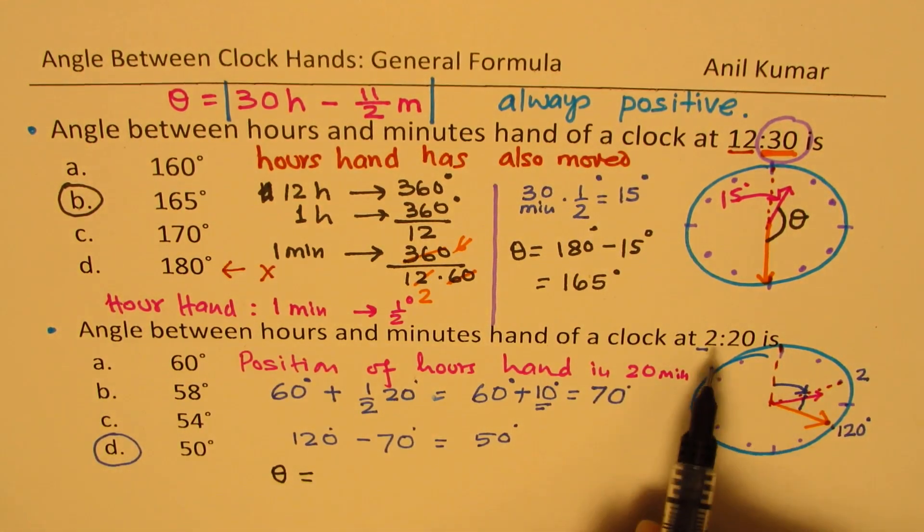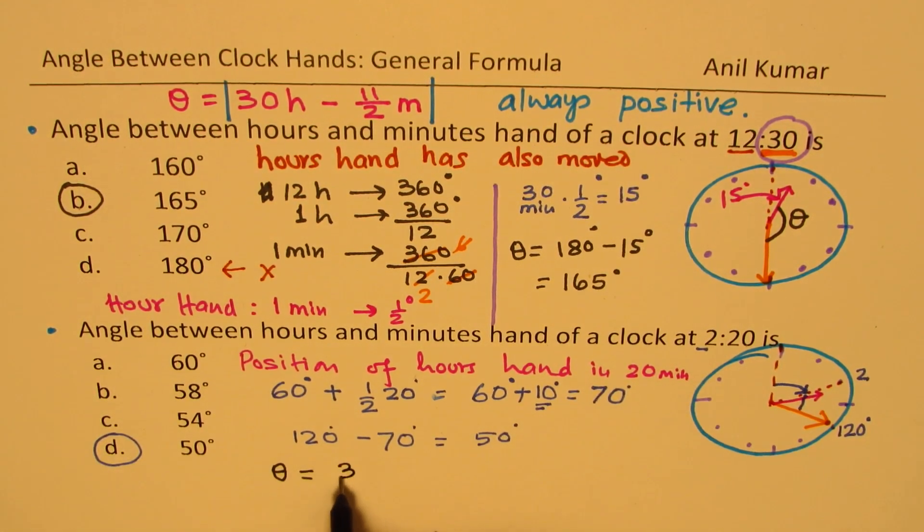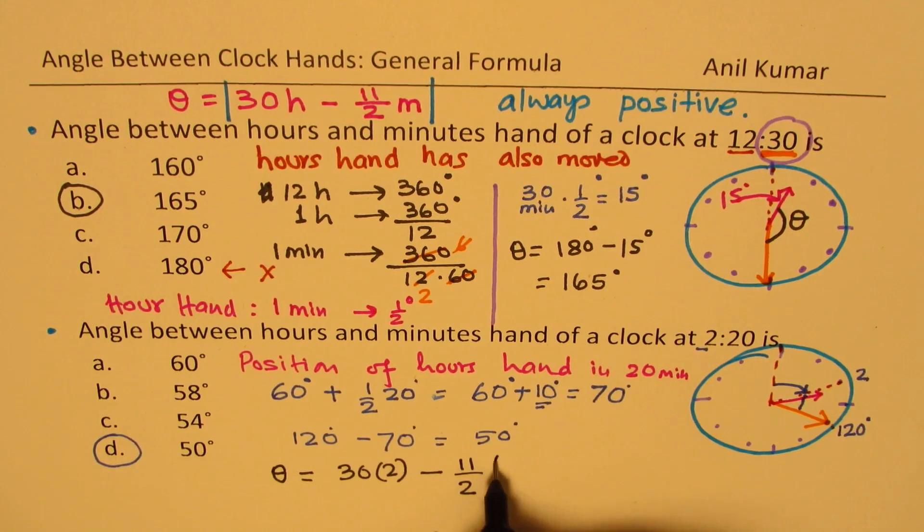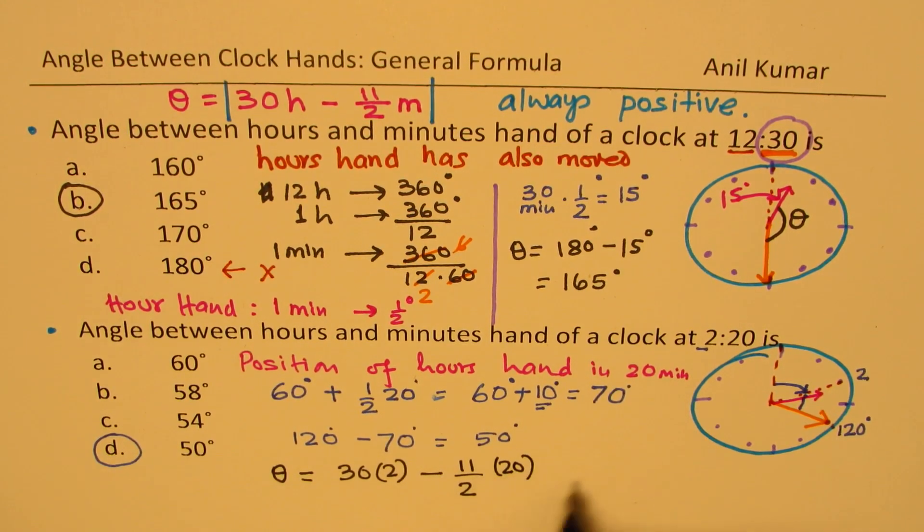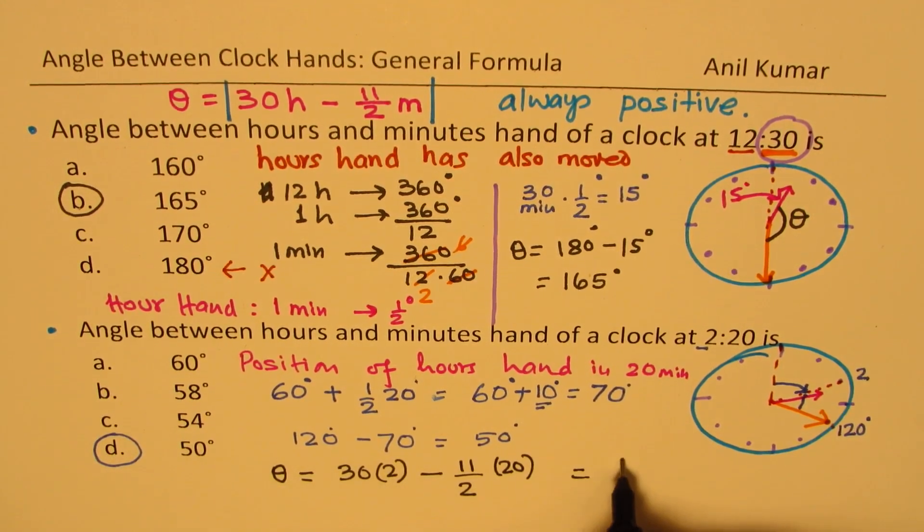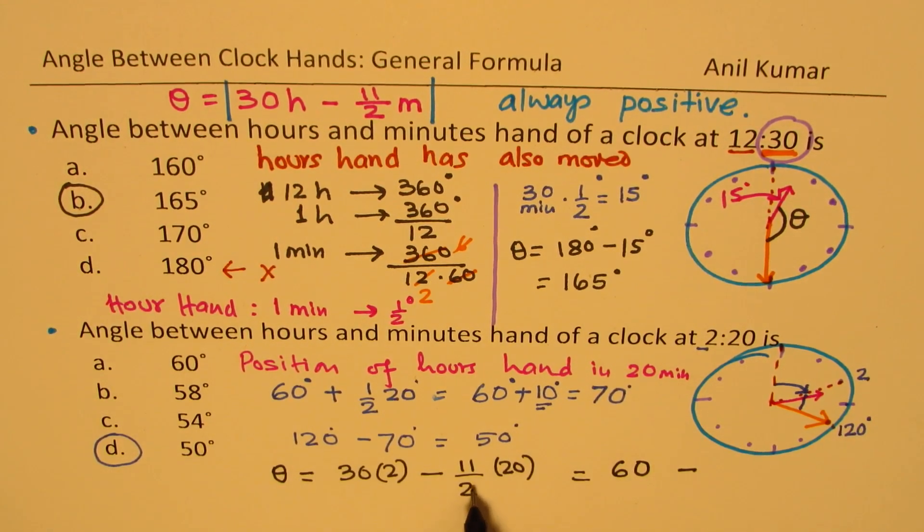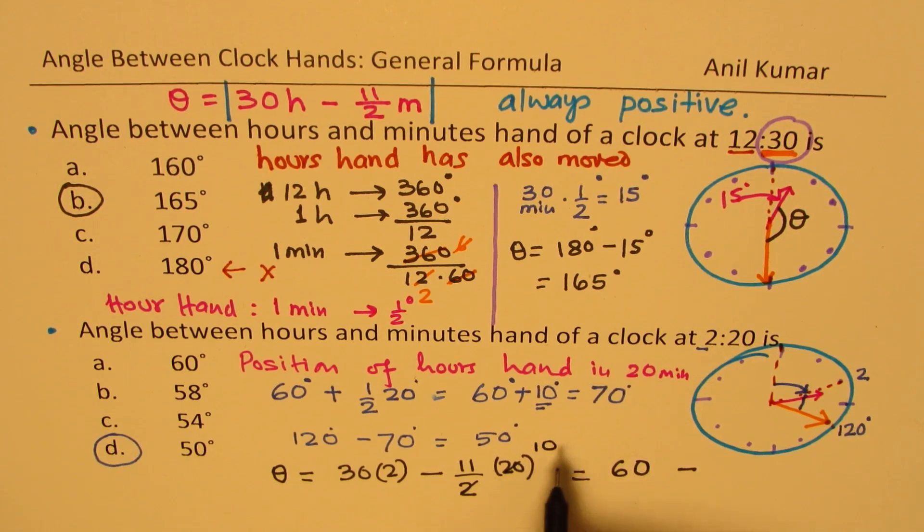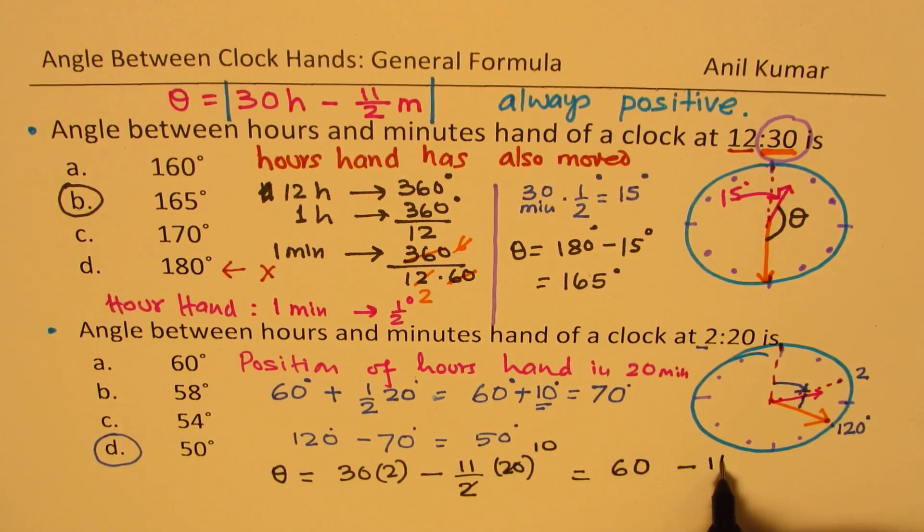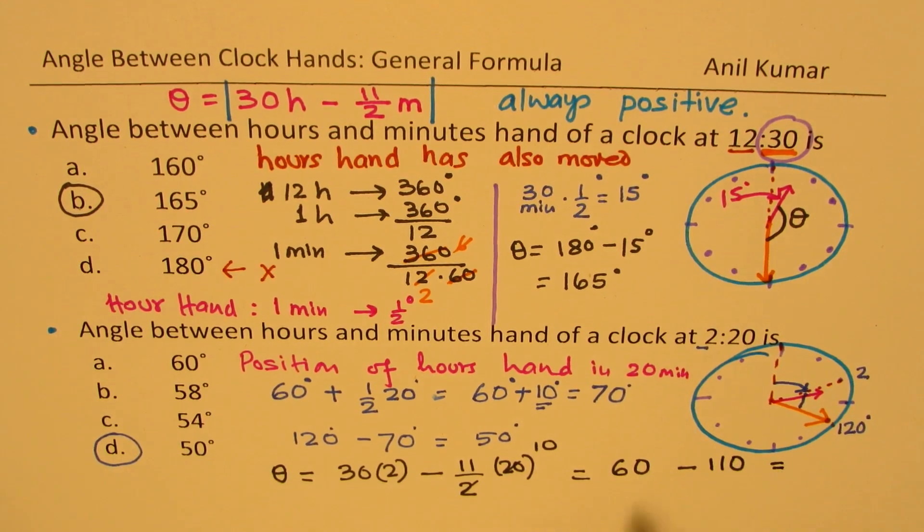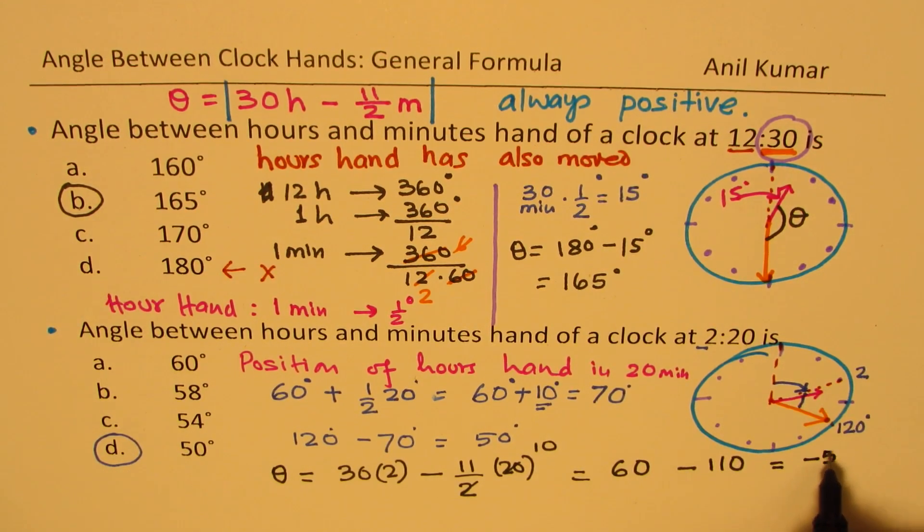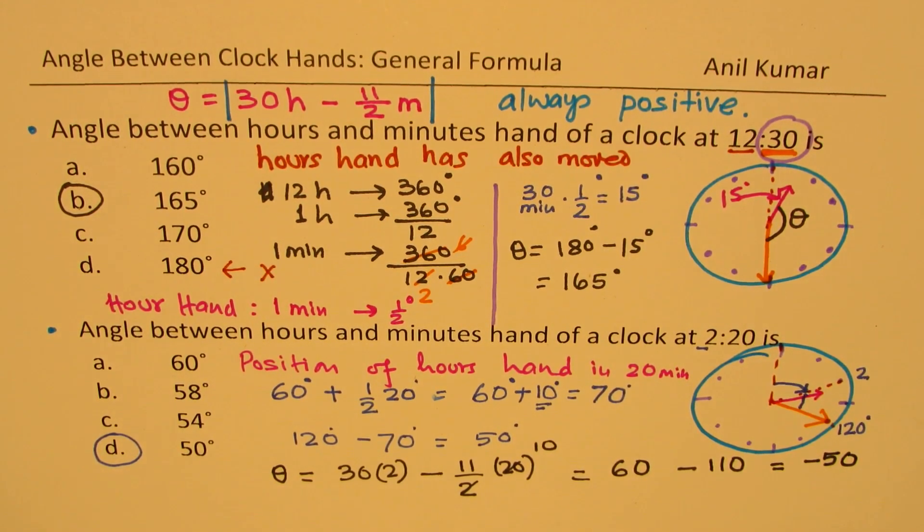So what I'm trying to say here is that you could always choose the formula theta equals to 30 times h. In our case, h is 2. So it would be 30 times 2 minus 11 by 2 of the minutes, which is 20. You could use this formula. So that gives you 30 times 2 is 60. And minus, when you do this, 2 goes into 20 ten times. So 10 times 11 is 110. So when you do this, you get minus 50.